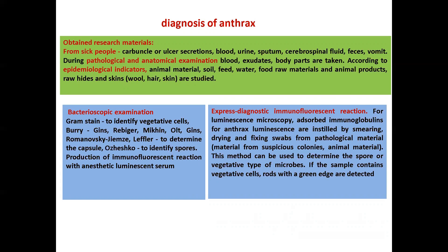Bacterioscopic examination: Gram stain is used to identify vegetative cells. Staining methods by Burri, Rebiger, Michaelis, Olgin, Romanowsky, and Leffler are used to determine the capsule, and Ajeska's method to identify spores. Express diagnostic immunofluorescent reaction is used with anthrax luminescent serum; adsorbed immunoglobulins for anthrax luminescence are applied to smears from pathological material, suspicious colonies, and animal material. This method can determine whether the microbes are spore or vegetative type.